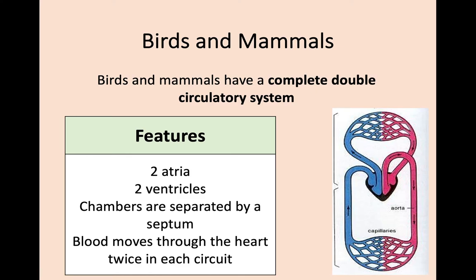We're going to start with what we know — the circulatory system of birds and mammals. This is called a complete double circulatory system. There are two atria — left and right — and two ventricles. The chambers are separated by an area called a septum down the middle. Hopefully you remember from National 5 that the atrium is at the top as the entrance point, and the ventricle is below it, with veins and arteries coming off to transport blood around the body.